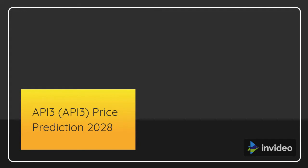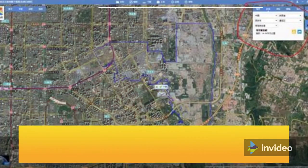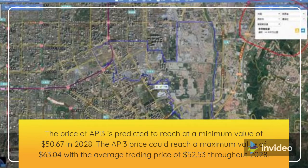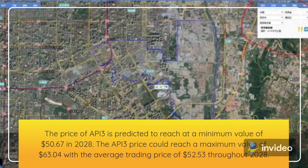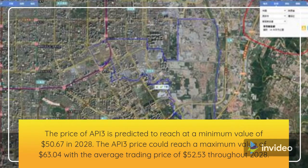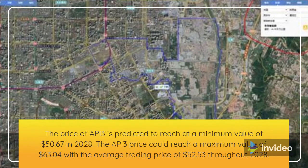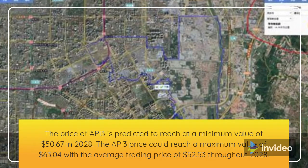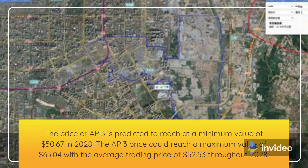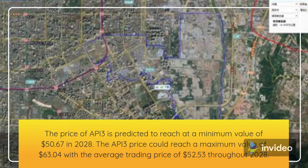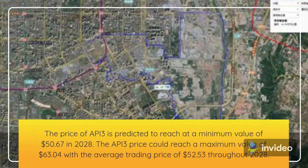API 3 Price Prediction 2028. The price of API 3 is predicted to reach a minimum value of $50.67 in 2028. The API 3 price could reach a maximum value of $63.64 with the average trading price of $52.53 throughout 2028.